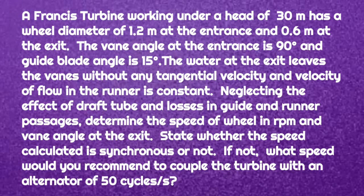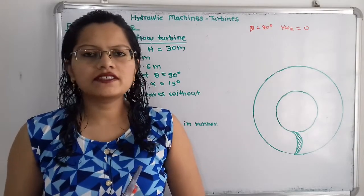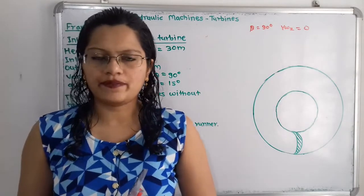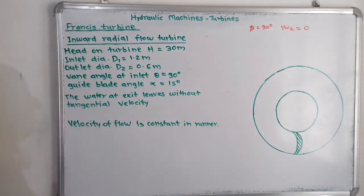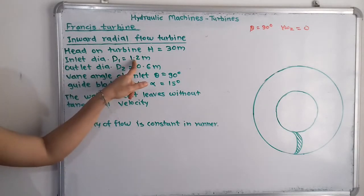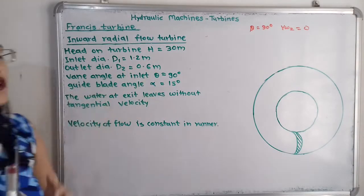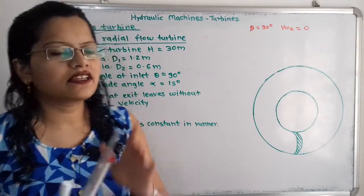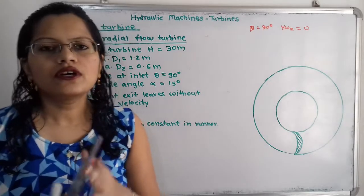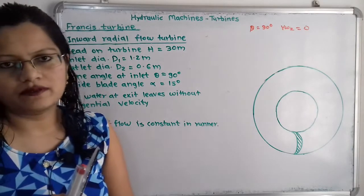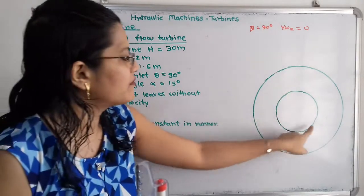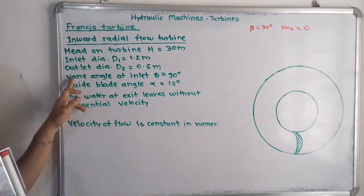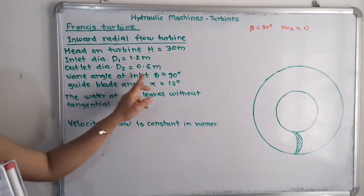Let us first understand the given data. Head of turbine H is equal to 30 meters. Inlet diameter D1 is 1.2 meters and outlet diameter D2 is 0.6 meters. Since it is a Francis turbine, this is an inward radial flow turbine, so the outer periphery is the inlet diameter and the inner periphery of the runner is the outlet diameter.